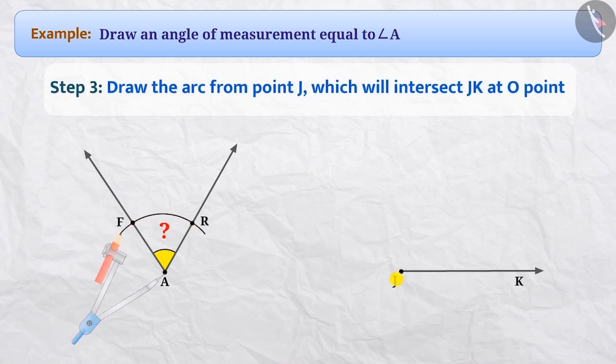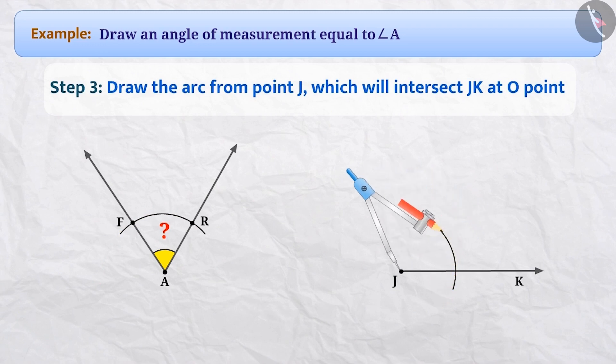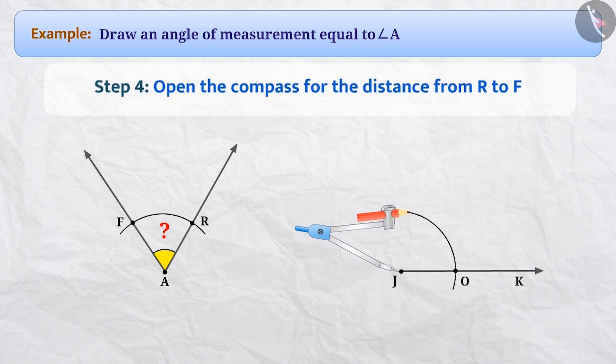Step 3: now we will take point J at the top and place the pointed end of the compass on J and draw an arc without changing the distance, which will intersect JK at point O.